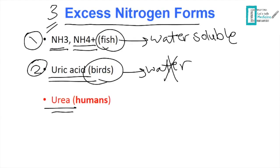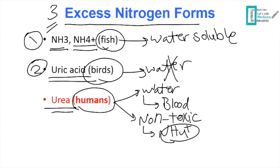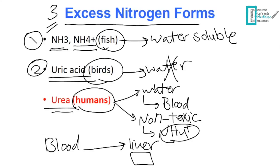The third form, which is our main concern here, is urea — found in humans. It is water soluble, so it can move easily in the blood, which helps in the urea cycle. Urea is also non-toxic to our bodies, which helps our bodies get rid of excess ammonium. The urea cycle occurs in the liver, where ammonium moves through the blood carried by glutamate and glutamine.